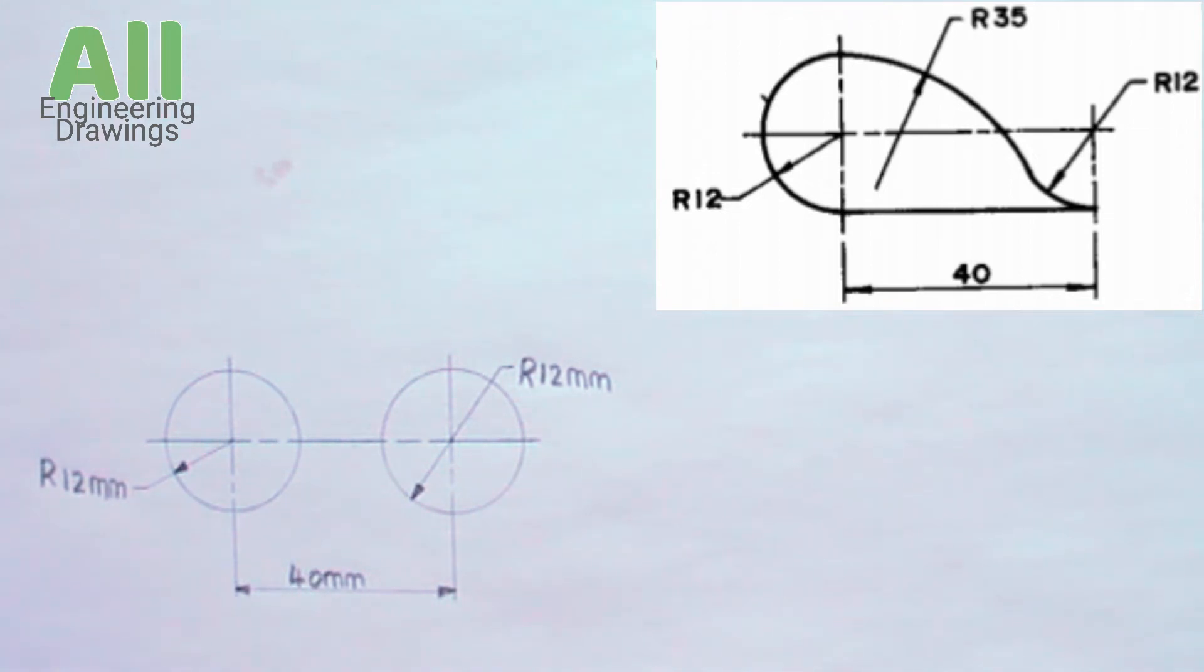To solve the above tangency problem, first you have to draw your layout this way. As you can see, the distance between the center of these two circles is 40 millimeters and the radius of the circles is 12 millimeters.